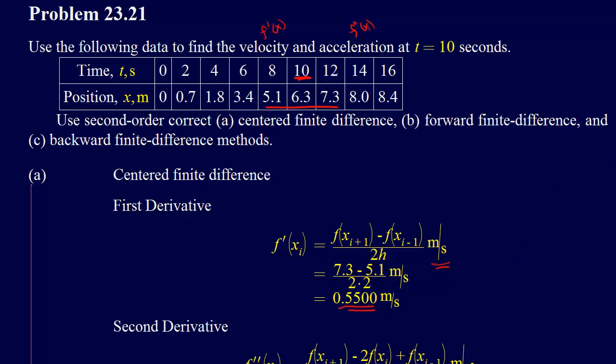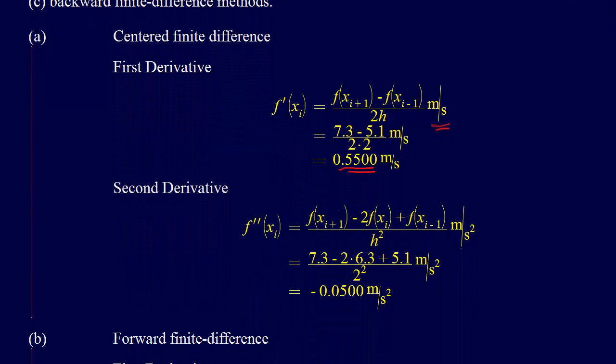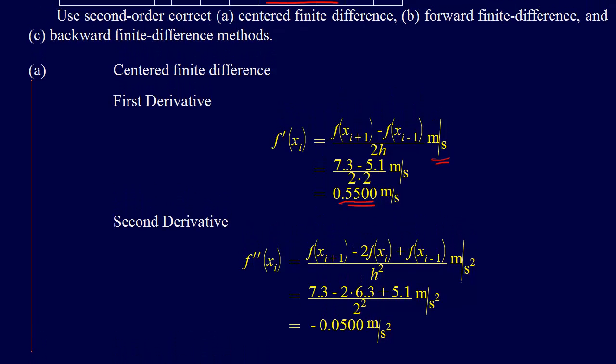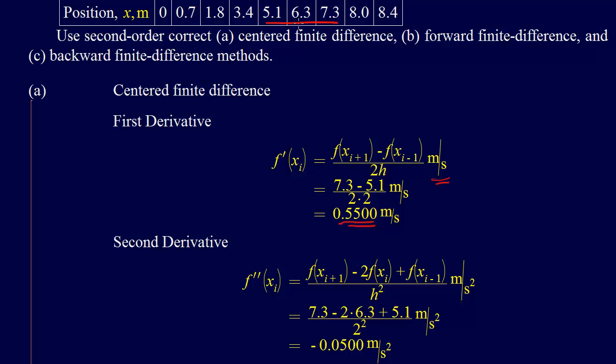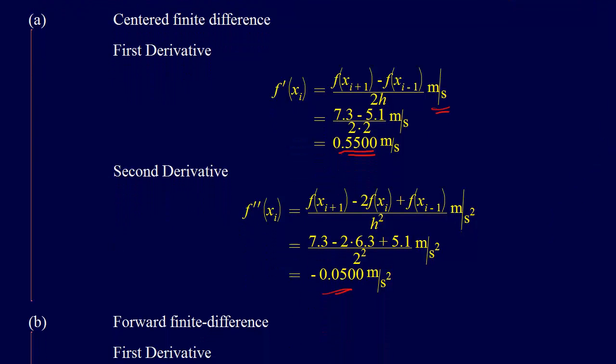Now we can do the same thing with the second derivative. If we look in the table again, the h squared accurate second derivative method is just the first one listed. It says f at xi plus 1 minus 2f at xi plus f at xi minus 1. We have 7.3 minus 2 times 6.3 plus 5.1 over 2 squared, and that gives us minus 0.05 meters per second squared.